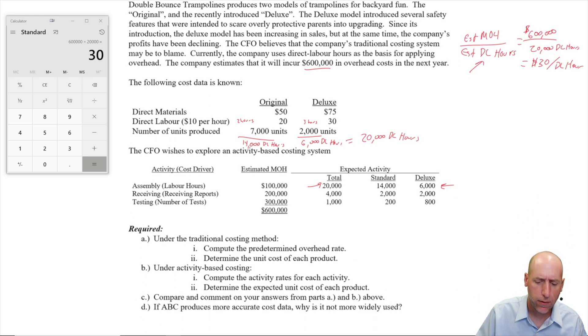Estimated overhead divided by the estimated direct labor hours here, $600,000 divided by 20,000 direct labor hours, gives us a rate of $30 per direct labor hour. So we've gotten our predetermined overhead rate. Reading on, the CFO wishes to explore an activity-based costing system. Material and labor we kind of already know, they're going to be the same no matter what system we use. Overhead, though, we've got to estimate, and the CFO is saying, we have to apply overhead, and why not try something that might be a little more accurate? Because I'm feeling like our numbers are shaky here.